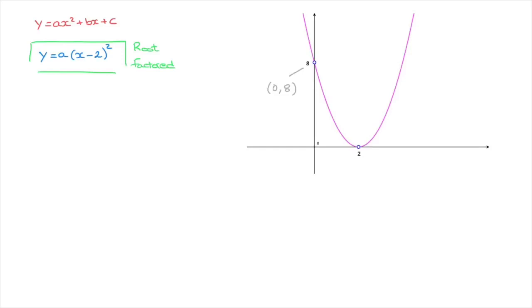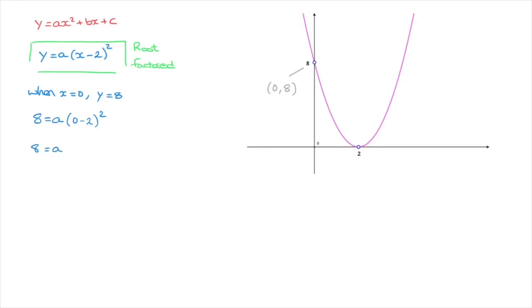The fact that the parabola passes through that point allows us to state that when x equals 0, y must equal 8. To find the value of a, we use the root factored form boxed in green and replace x with 0 and y with 8. That gives us: 8 equals a times (0 minus 2) squared, which is 8 equals a times (negative 2) squared.